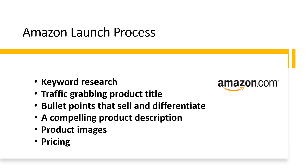There are six key elements in your listing to get right for product launch. First is keyword research. Second is a traffic-grabbing product title. Third, bullet points — these sell and differentiate your product, and you can include root and long-tail keywords here. Fourth, writing a compelling product description. Fifth, product images that attract and convert shoppers into customers. Sixth, pricing. You have to be competitive when launching and be prepared to make smaller profits during that launch period.